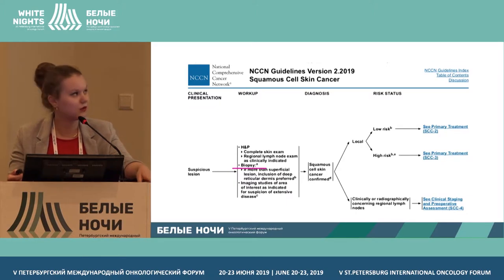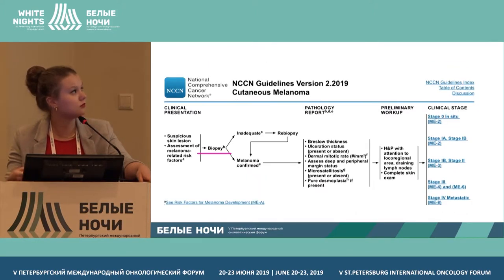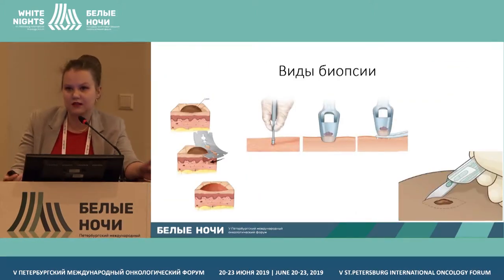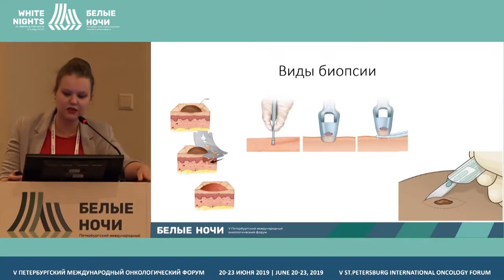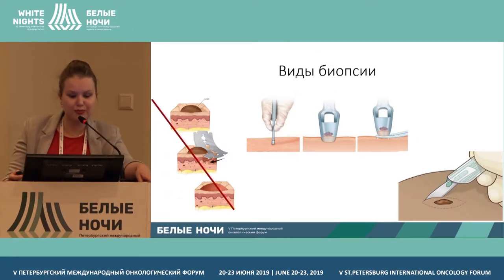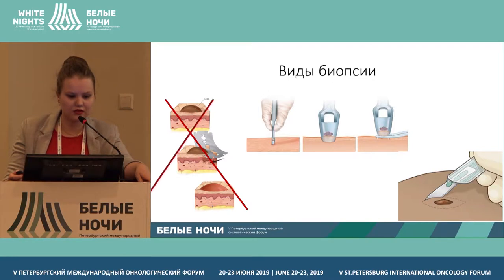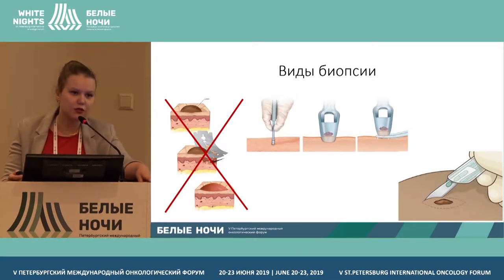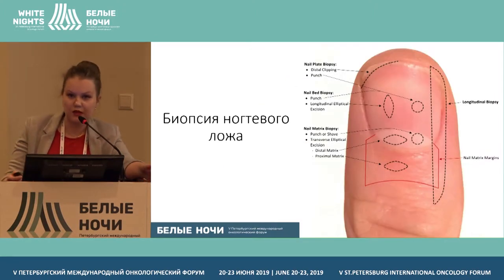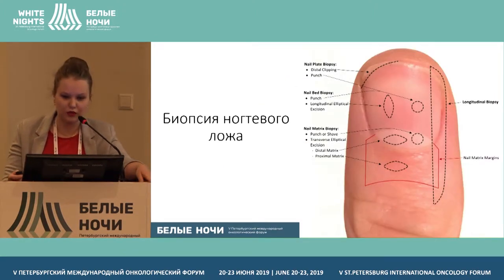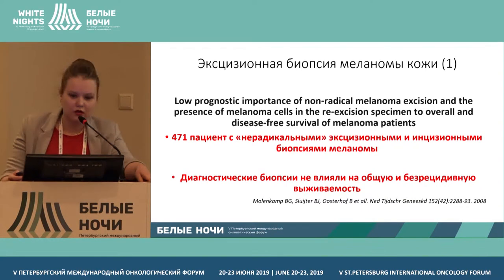Looking at NCCN guidelines, biopsy comes first. For squamous cell carcinoma, biopsy is indicated; for melanoma, biopsy is also indicated. The main biopsy types are shave biopsy and excision biopsy. For pigmented neoplasms, shave biopsy is not applicable because it can alter the thickness measurement, which is critical for diagnosing melanoma. These types of biopsy are also used for nail lesions.